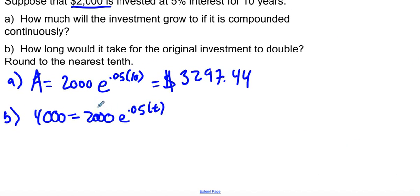I see here that we have a value times this, so I can divide both sides by 2,000. Cool. So 4,000 divided by 2,000 is just 2. So then we get E raised to the 0.05 T.